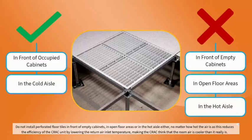Placing tiles in the hot aisle reduces the efficiency of the CRAC unit by lowering the return air inlet temperature, making the CRAC think that the room air is cooler than it really is.